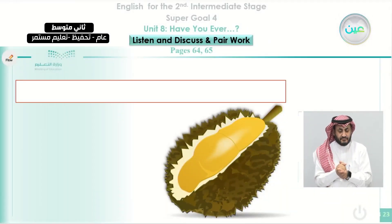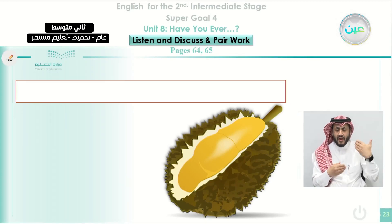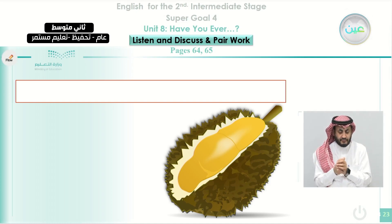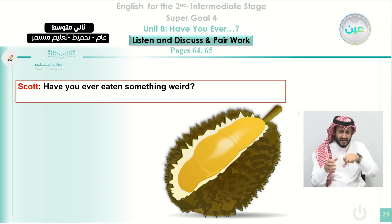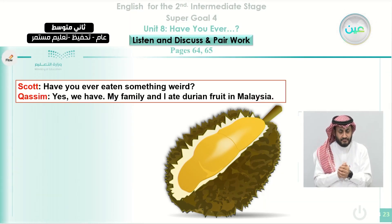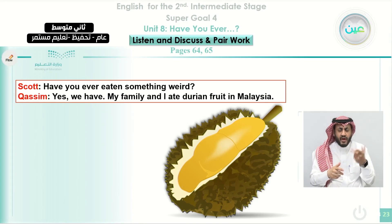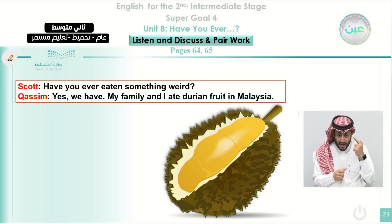Another question is about food — a kind of food found in some tropical areas called durian fruit. It has a good taste but a bad smell. Scott asks, 'Have you ever eaten something weird?' Here, 'weird' means strange. Gassim answers, 'Yes, we have. My family and I ate durian fruit in Malaysia.' When he specifies the time and place, he uses the past simple.